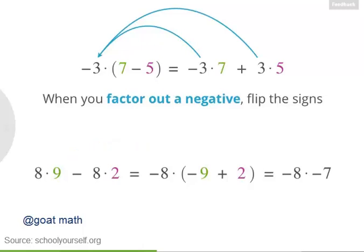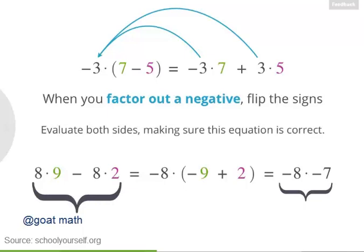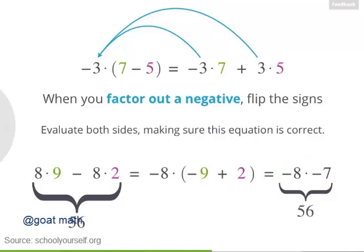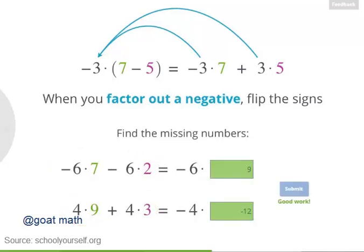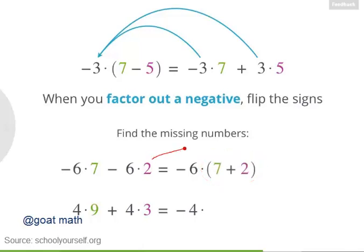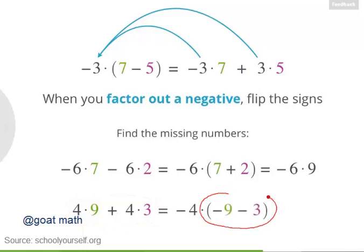Let's make sure we factored out correctly — go ahead and evaluate these two expressions, making sure they really are equivalent. Excellent. 8 times 9 is 72, and you're subtracting 8 times 2, or 16. That gives you 56. And over here, the minus signs cancel out, so negative 8 times negative 7 also equals 56. So this rule for factoring out negatives really does work. Try finding the missing numbers in a few more examples: factoring out negative 6 from one expression, and negative 4 from another. Brilliant. Flipping the signs, both minus signs become plus signs, giving us 7 plus 2 in the parentheses, so the top expression equals negative 6 times 9. And down here, the plus signs become minus signs, so we have negative 9 minus 3 in parentheses, so that bottom expression equals negative 4 times negative 12.